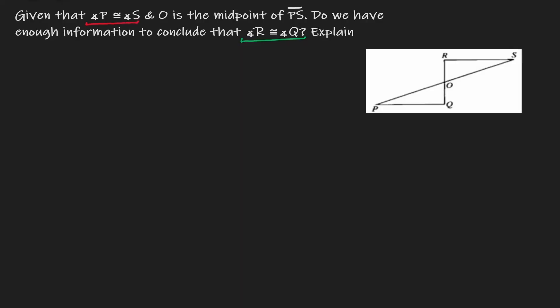Let's label our diagram. Angle P is congruent to angle S. Since O is the midpoint of PS, we know that PS gets cut in half — therefore PO is congruent to OS. We also have an intersection here, which gives us two vertical angles, and therefore we can claim that those vertical angles are congruent to each other.